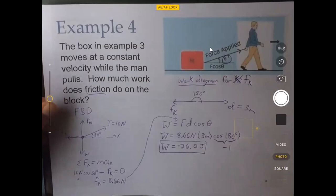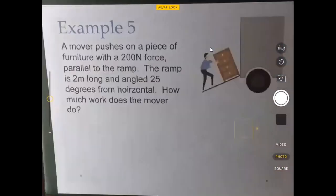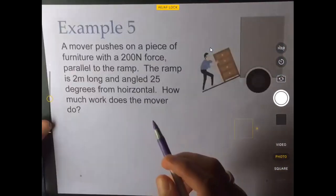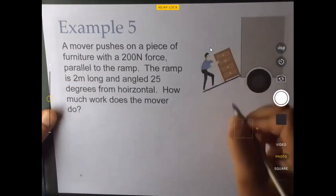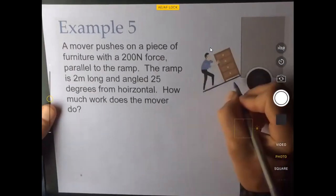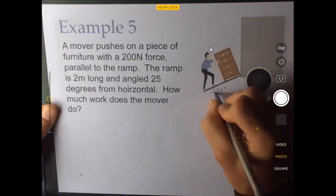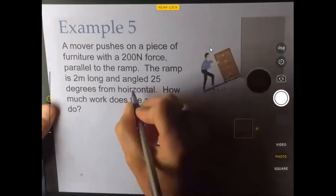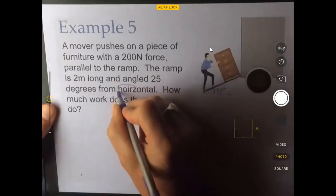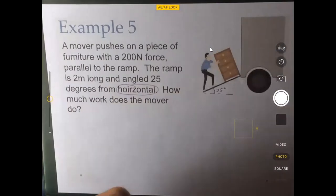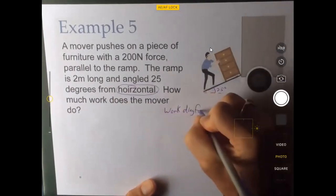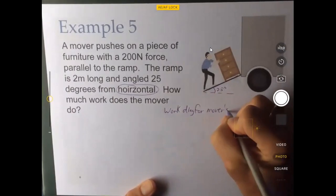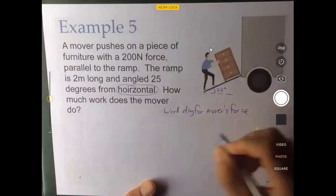Let's do one more example. Look at a mover pushing on a piece of furniture with a 200 newton force. He's pushing parallel to this ramp here and the ramp is two meters long and the angle is 25 degrees. And you can see that I misspelled horizontal. But I think we can still go on. How much work does the mover do? Let's draw a work diagram for the mover's force.